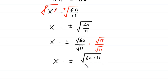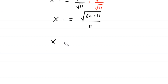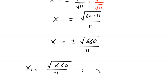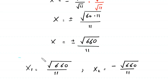Rationalizing: x equals plus or minus square root of 60 over 11, which becomes plus or minus square root of 660 divided by 11. From here we get two values of x: x₁ is equal to square root of 660 divided by 11, and x₂ is equal to negative square root of 660 divided by 11. So we have two solutions for this equation.